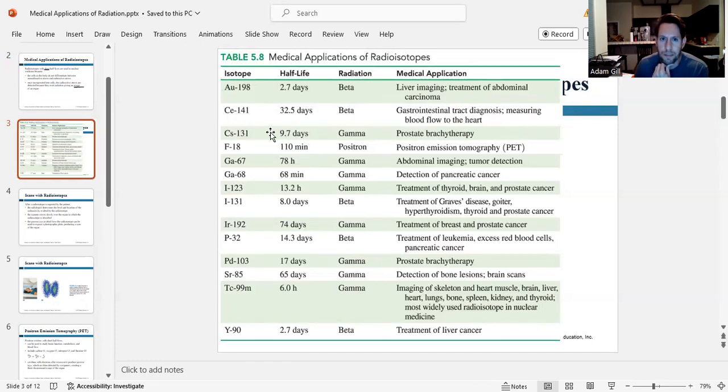Cesium-131 has a half-life of 9.7 days. It's a gamma emitter. We use this for prostate brachytherapy. Fluorine-18 has a half-life of 110 minutes, extremely short. It's a positron emitter, and we use it for positron emission tomography or PET scans.